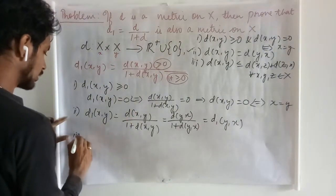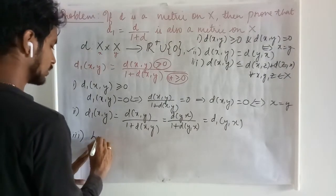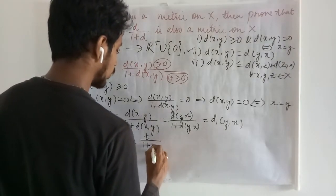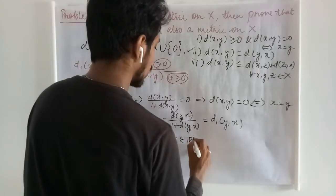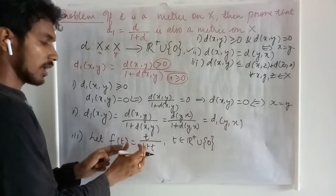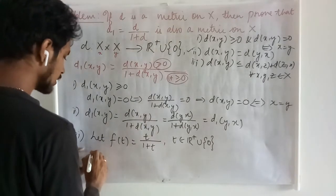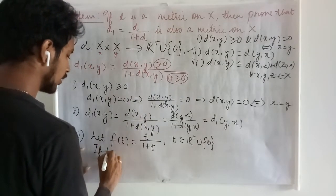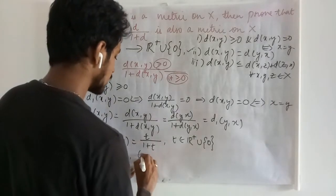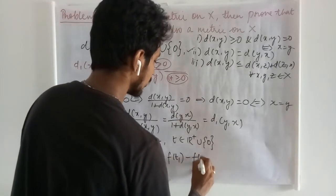The third one: we need to prove the triangle inequality, for which let me consider F(T) = T upon 1 plus T, where T is a non-negative real quantity. Now we are trying to say this is an increasing function of T, for which let me take: if T1 ≤ T2, and consider F(T1) minus F(T2).